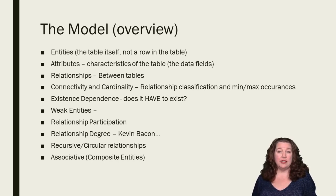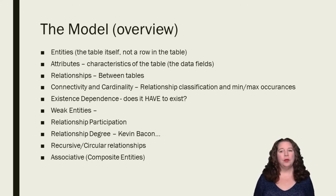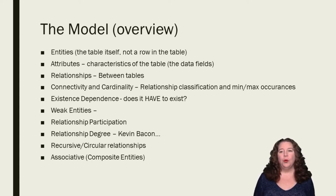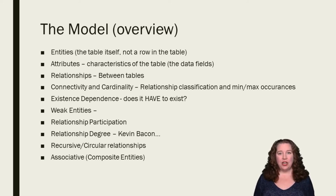You're going to have a different slide for each one of these items. You're going to have existence dependence — does it really have to exist? Do we have to have this table, and does it have to be a one-to-one, or can it be a one-to-zero-to-one? Can it be optional? We'll talk about optionality. We're going to describe weak entities, participation in relationships, degrees — which has nothing to do with Kevin Bacon — and then recursive and circular relationships, where in the table you are referencing another entity in the table itself recursively. And then our composite or multi-value associative entities.